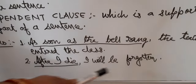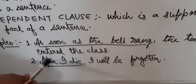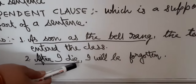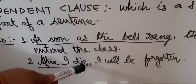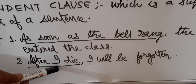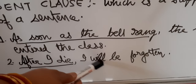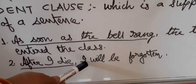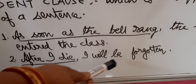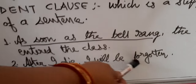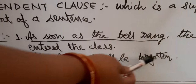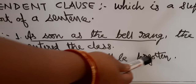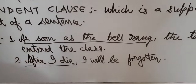Another example: 'After I die, I will be forgotten.' Here 'after I die' — I is subject, die is verb. So this is a clause. But 'after I die' — mere marne ke baad — meaning adhura hai, so this is the dependent clause. 'I will be forgotten' — I is subject, forgotten is verb, this is the main independent clause because it gives the complete meaning.